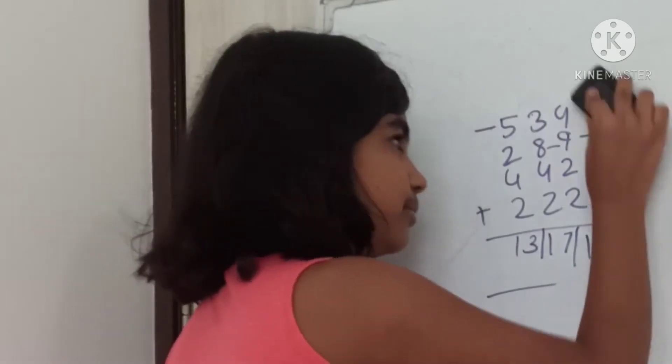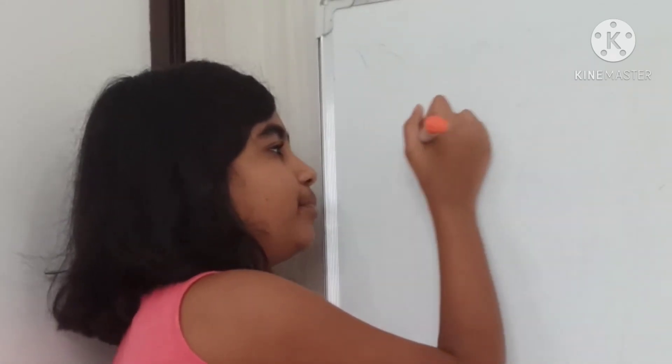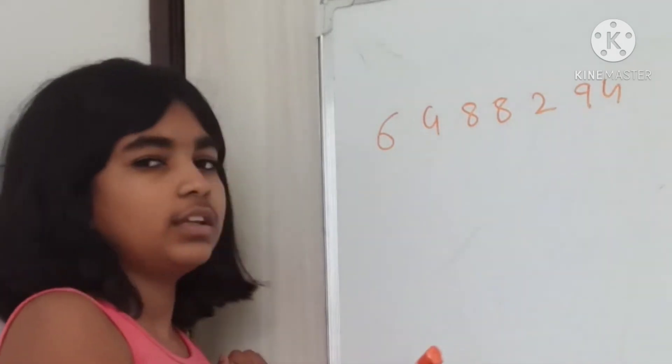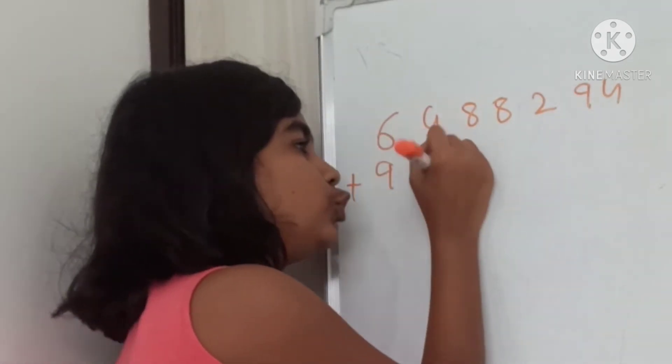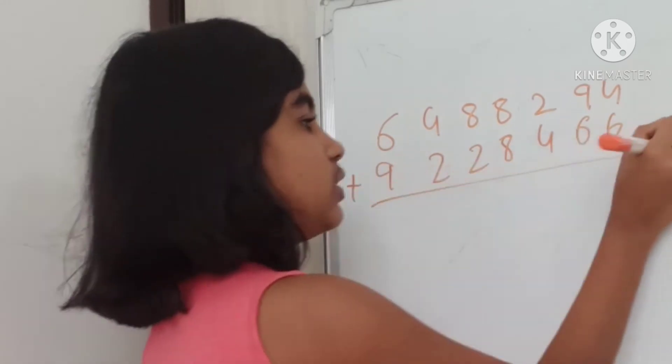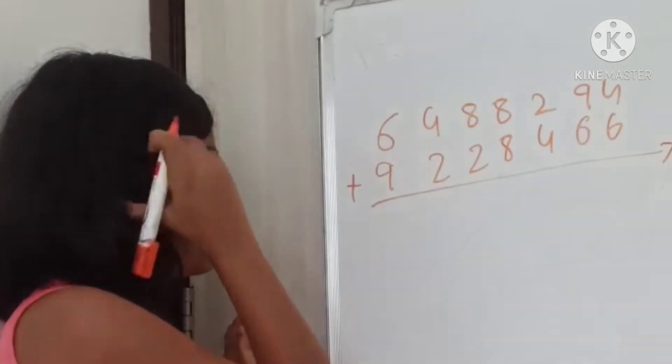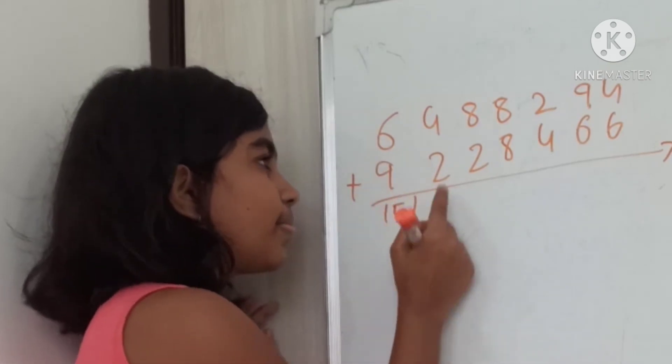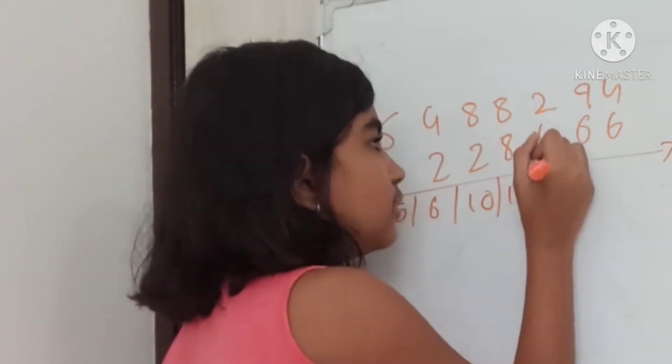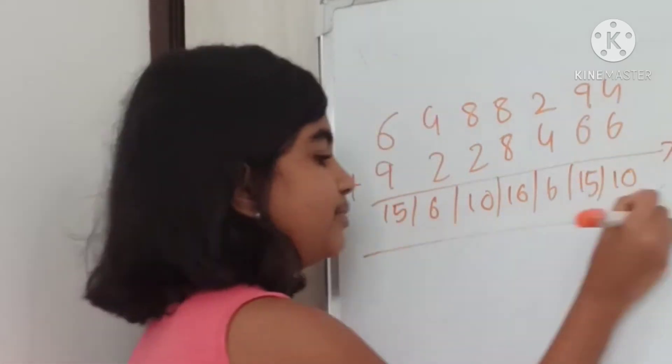Let's take another example. Let's take 6488 plus 294 plus 9228 plus 466. This is the sum we have to do. So, we'll go left to right. 9 plus 6, 15. 10 plus 6, 16.